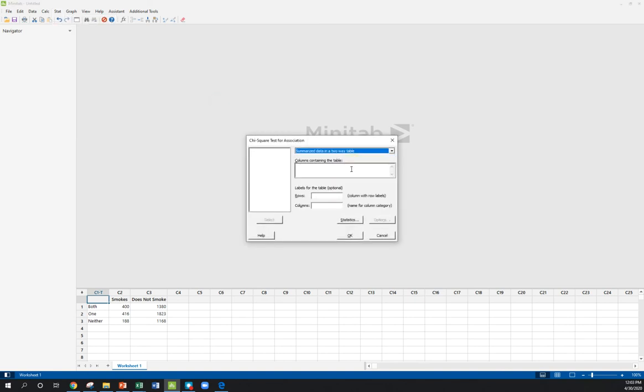I can tell it that our actual numbers are in columns C2 and C3, so that's where our table lies. And then we have a nice option that Minitab gives us here that'll kind of help us keep everything straight—we can include our column and row labels.